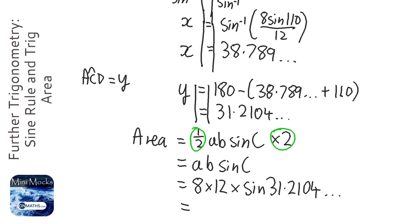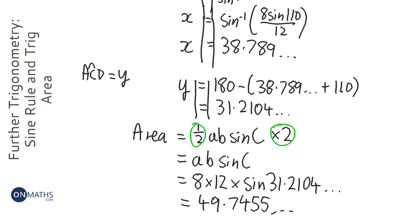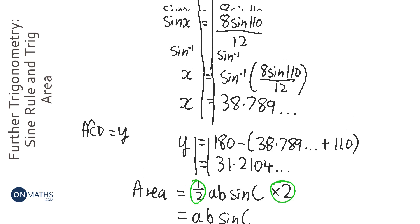So let's quickly use the calculator before it switches off. So I'm going to press sine answer, close bracket, times 12 times 8. And it says the answer is 49.7455 blah blah blah. Let's have a look and see the accuracy that I need. One decimal place. So let's have a look. That's going to be 49.7.